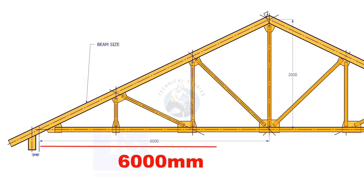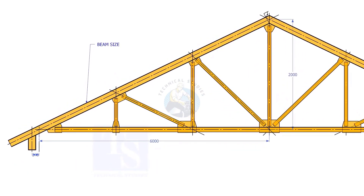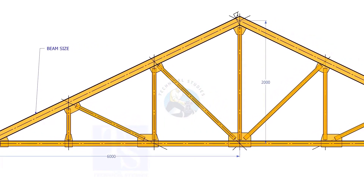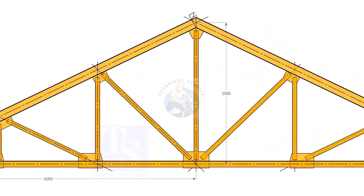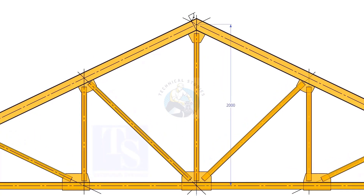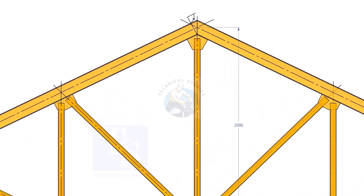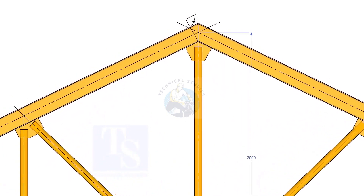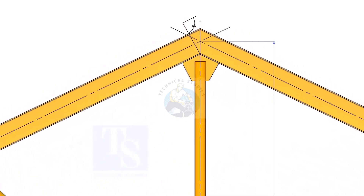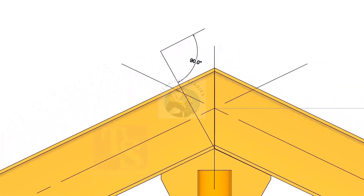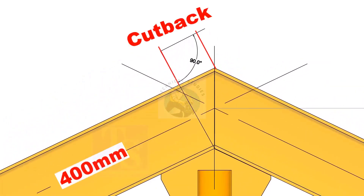Assume that the half span of a truss is 6000mm and the height of the truss is 2000mm. How do we calculate the cutback of a 400mm wide girder?